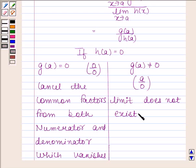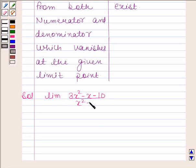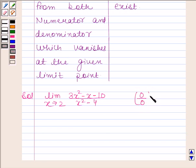Keeping this in mind, let's now begin with the solution. We have to evaluate the limit of (3x squared minus x minus 10) by (x squared minus 4) as x tends to 2. This is a rational function, and the limit of g(x) by h(x) as x tends to a is g(a) by h(a). On putting x as 2 in both numerator and denominator, we get 0 by 0.